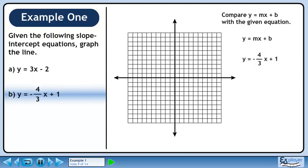Compare y equals mx plus b with the given equation. The value of m is minus 4 over 3, so that is the slope.